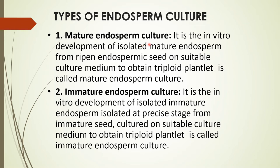In mature endosperm culture, it is the in vitro development of isolated mature endosperm from ripened endospermic seed on a suitable culture medium to obtain a triploid plantlet. In immature endosperm culture, it is the in vitro development of isolated immature endosperm, isolated at a precise stage from immature seed, cultured on a suitable culture medium to obtain a triploid plantlet.